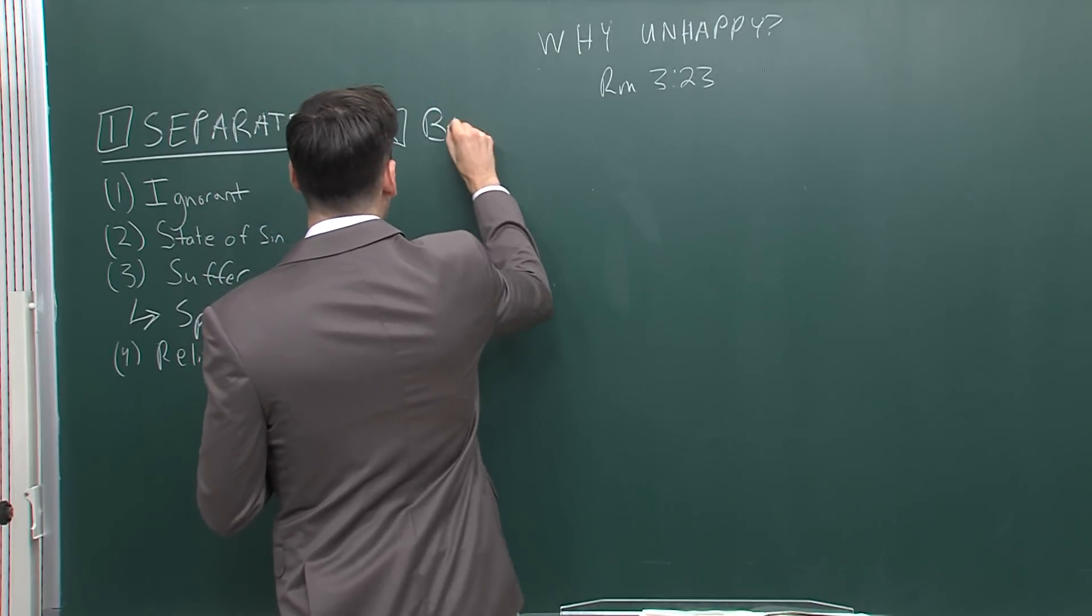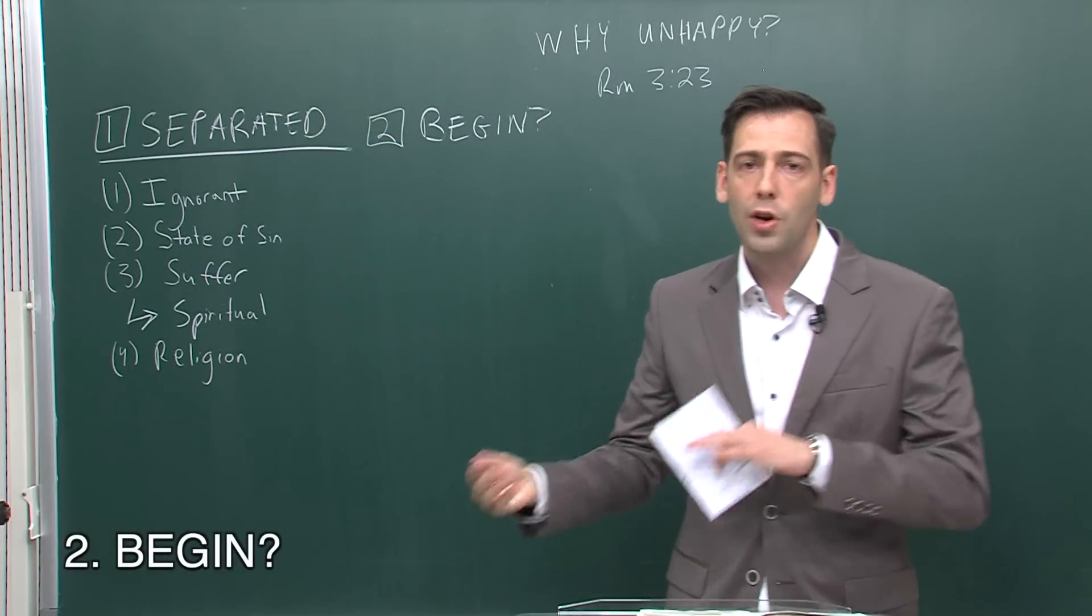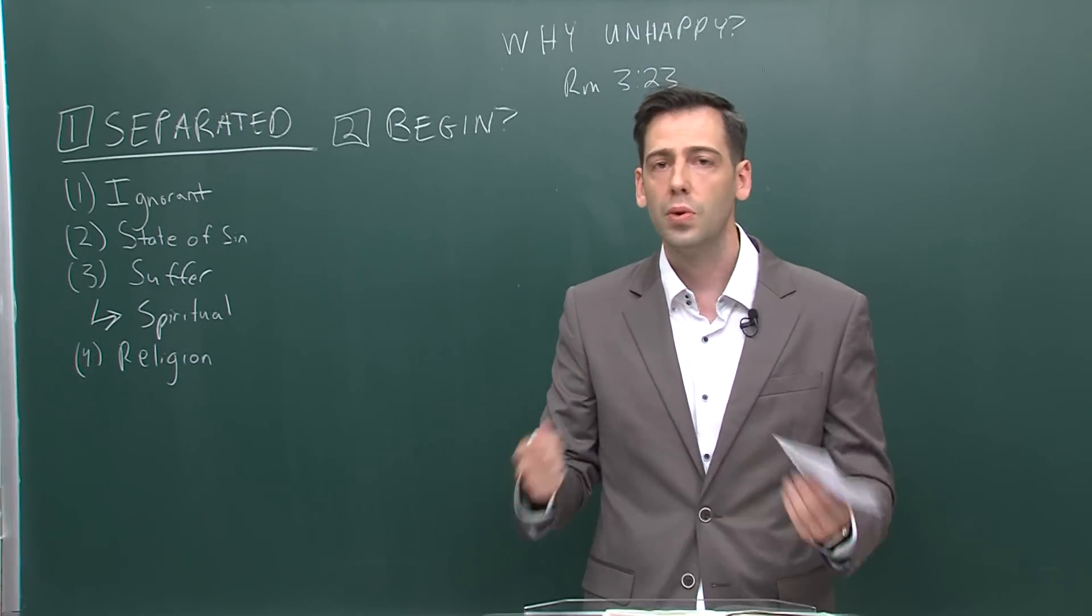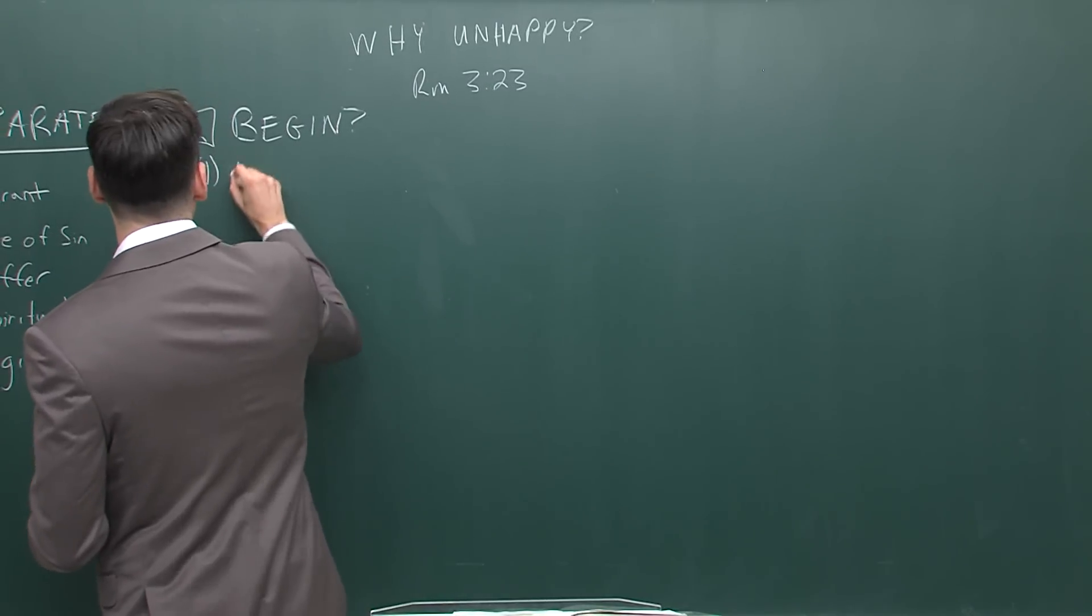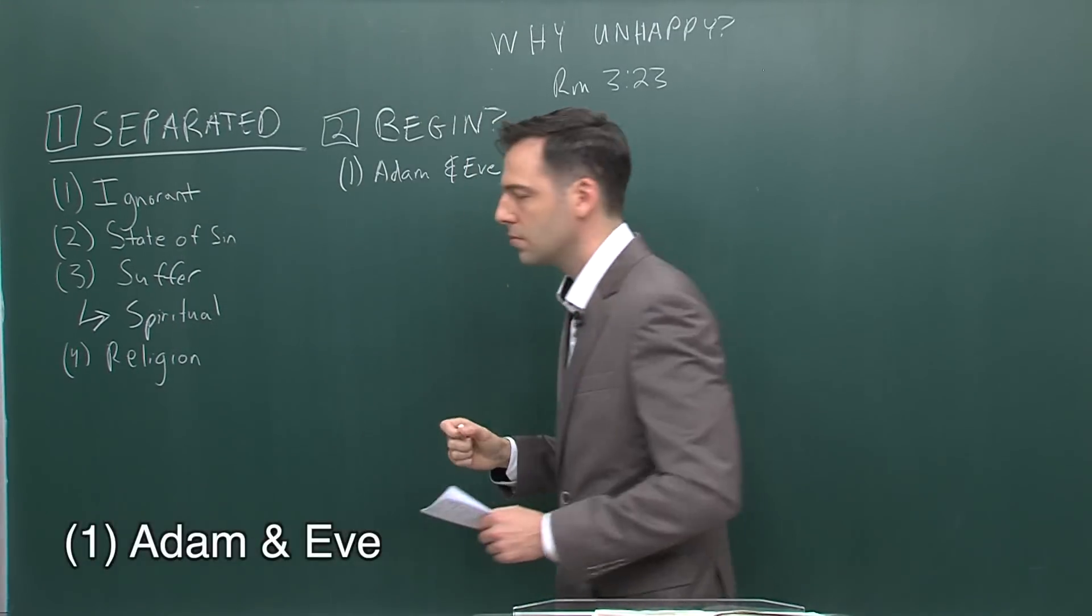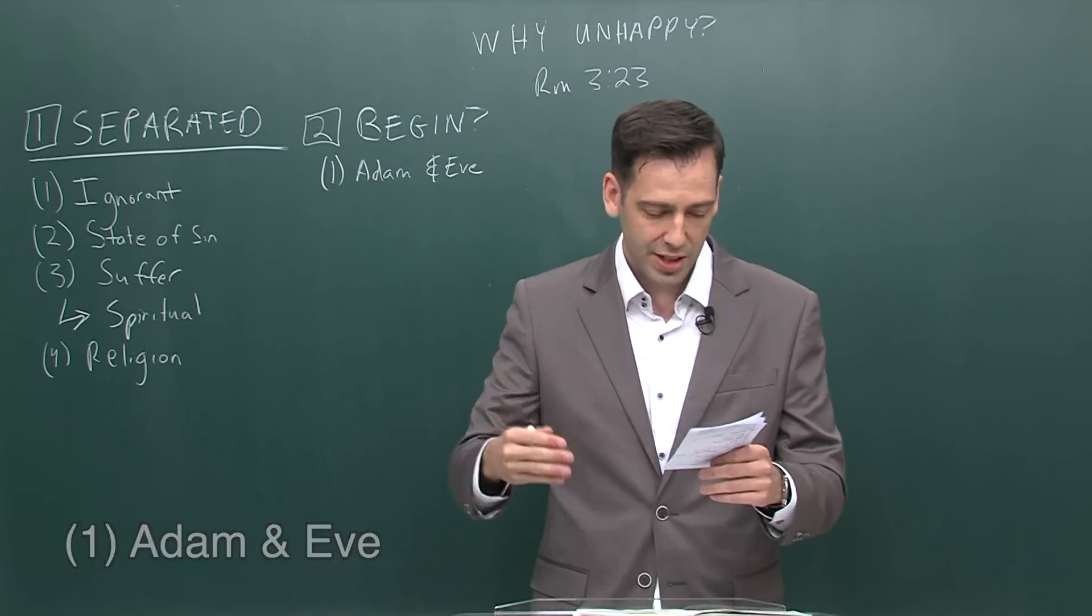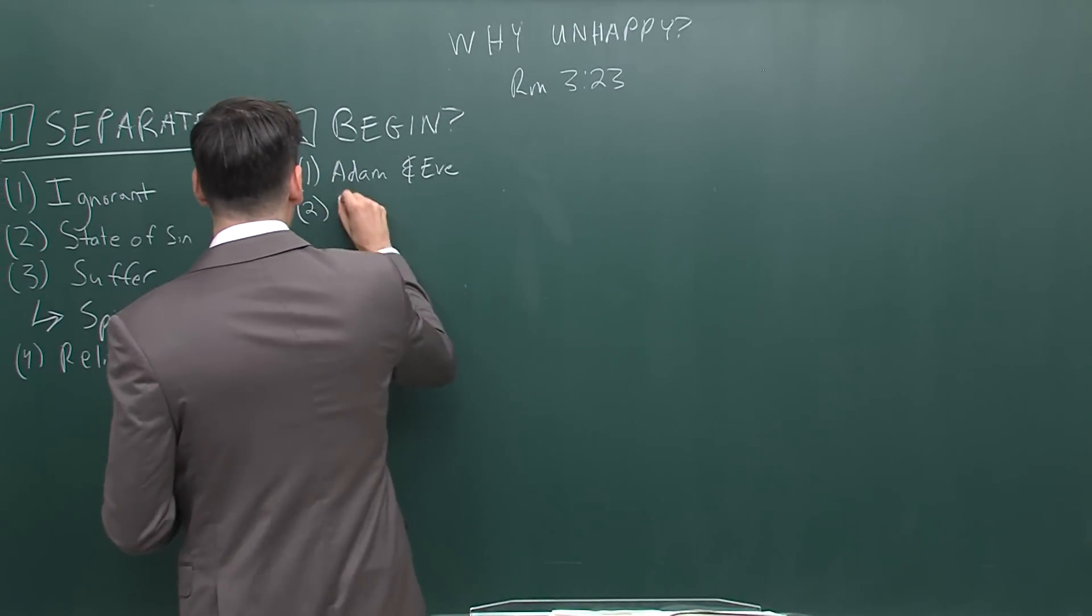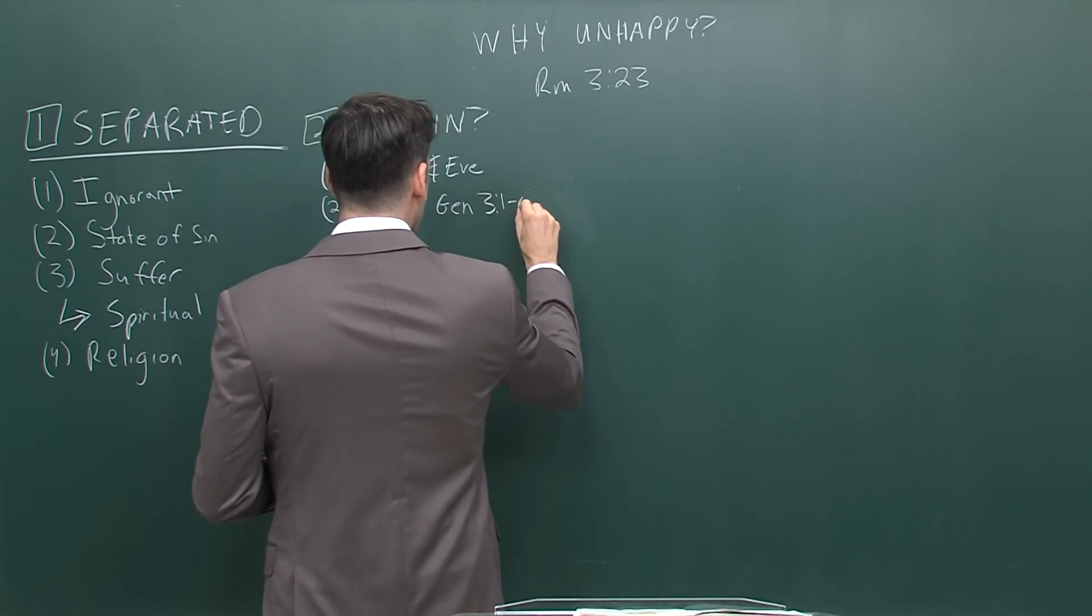So, when did this suffering actually begin? When did this begin? So, we go back to the start of time. At the start of time, God created everything. He created the universe. He created the world. He created the plants and the animals. And he also created mankind. He created Adam and Eve. And after he created them, he said, it is good. And his creation was good. It was meant to be good. But then, something happened. And this is the start of all of our problems. This is the root problem.